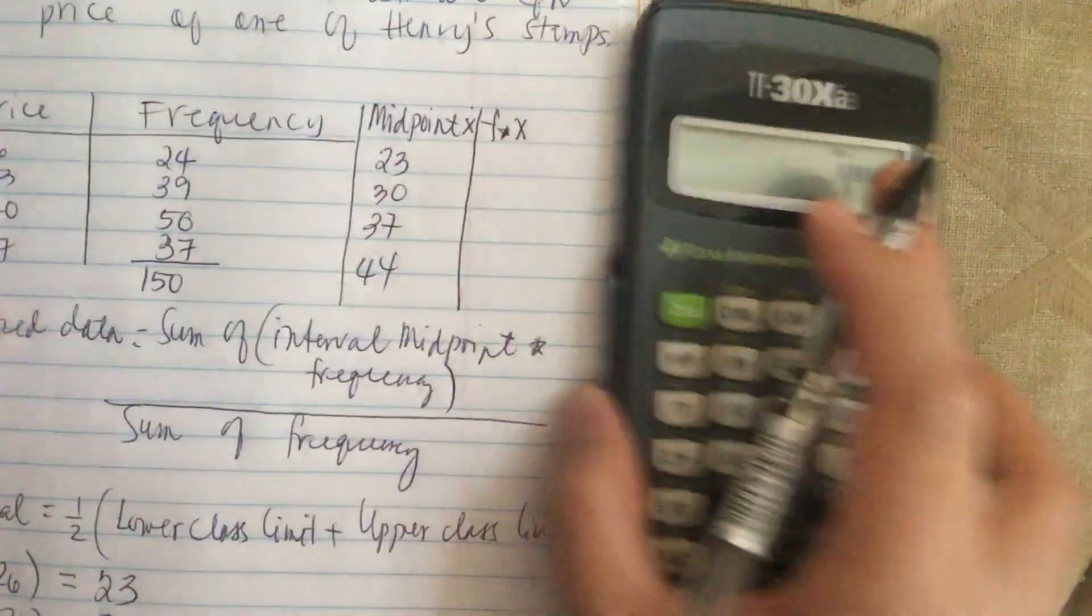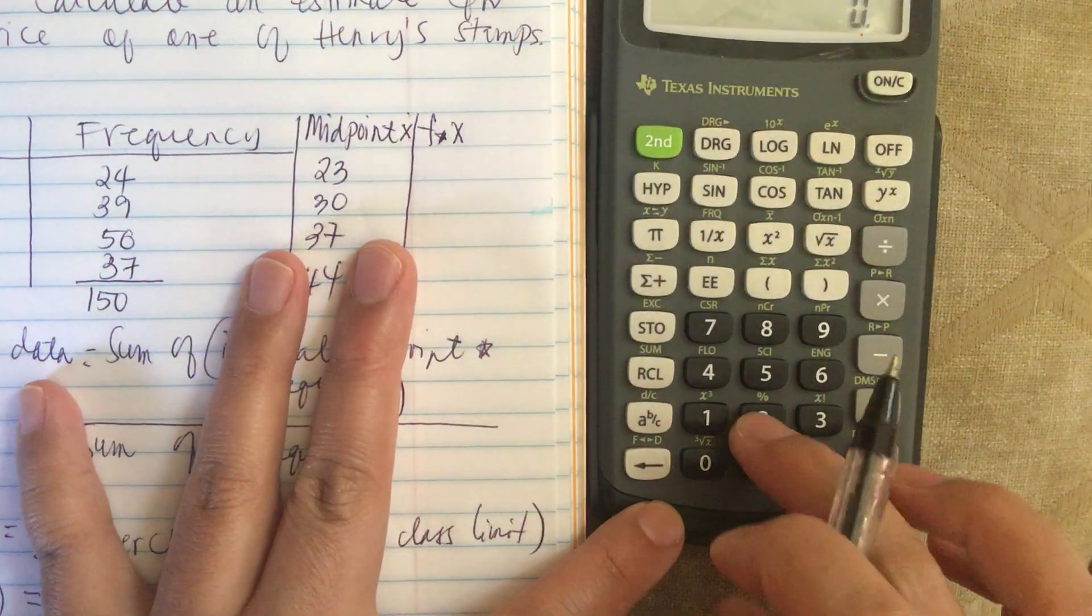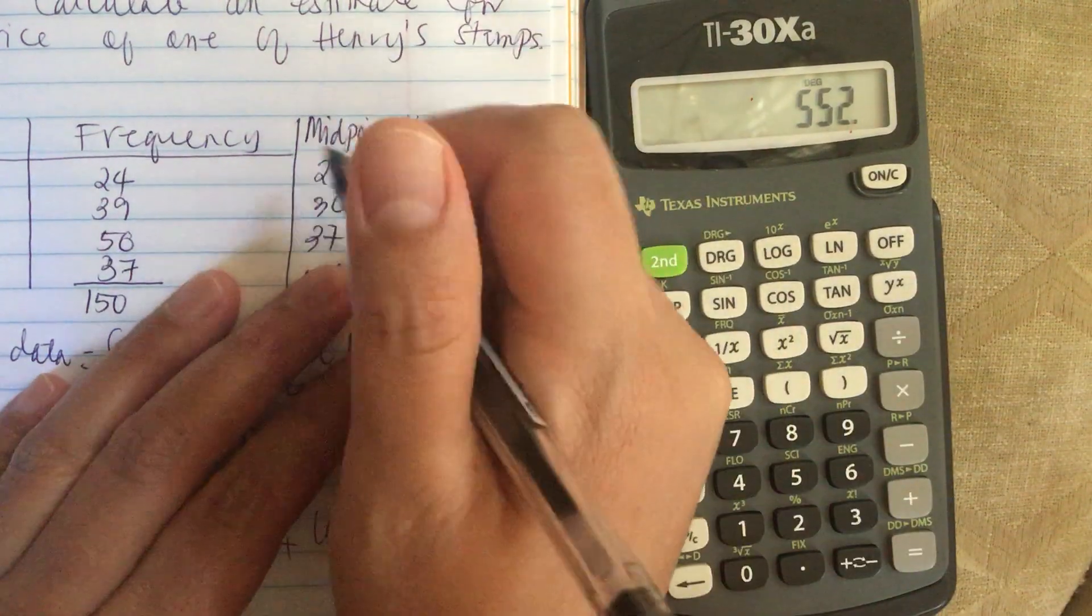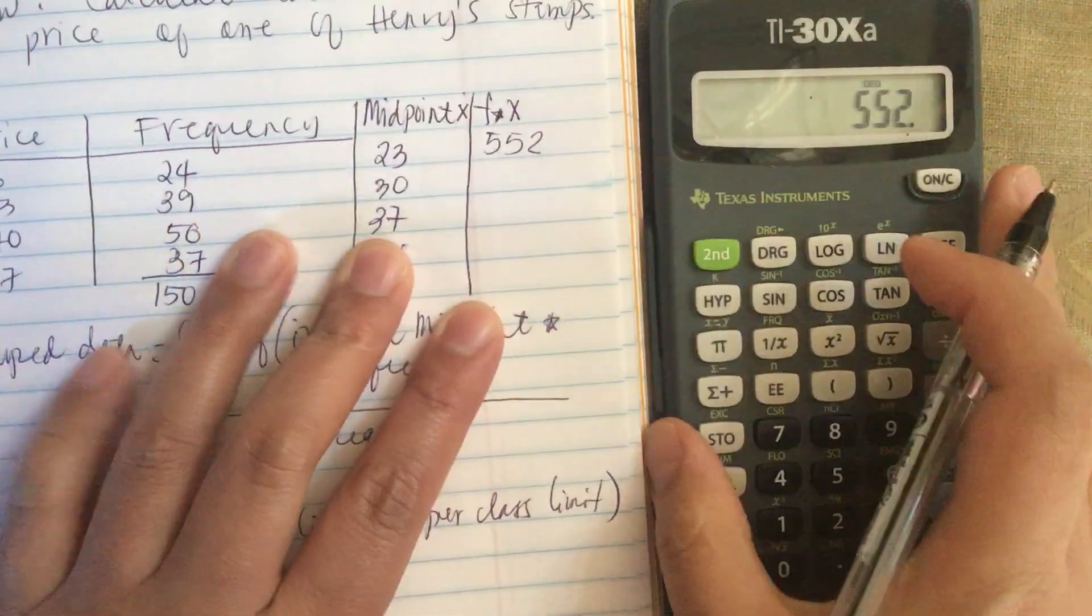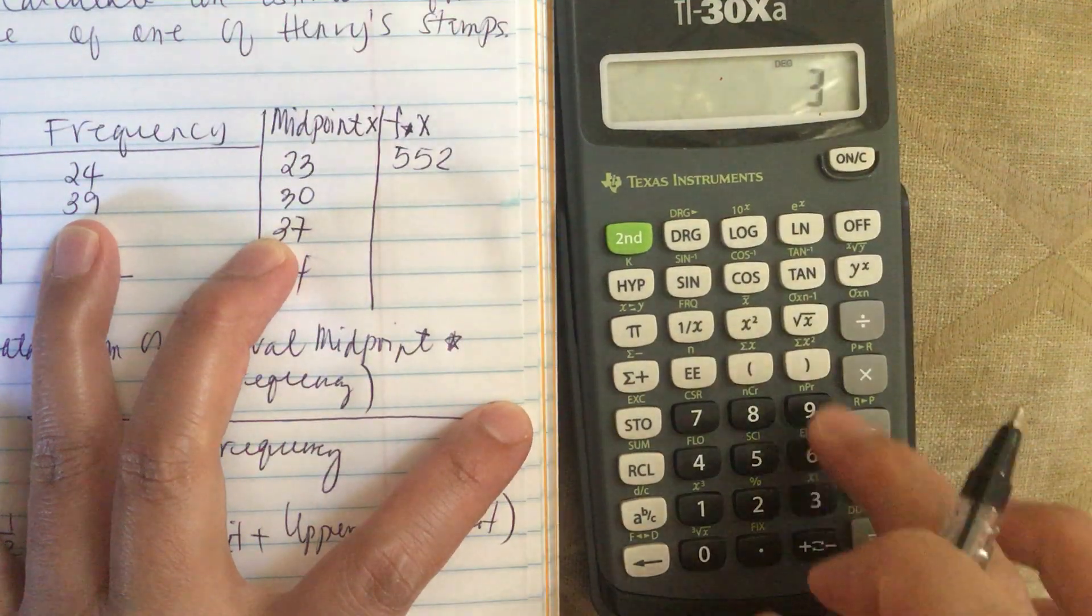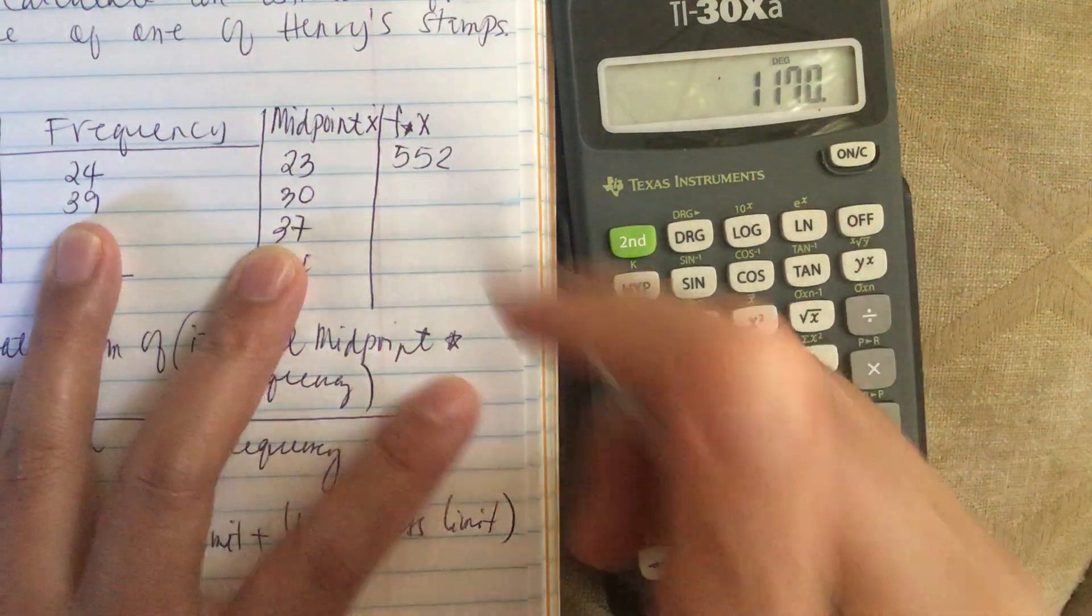Let's multiply 24 times 23. It's equal to 552. Now the next one is 39 times 30, which is 1170.